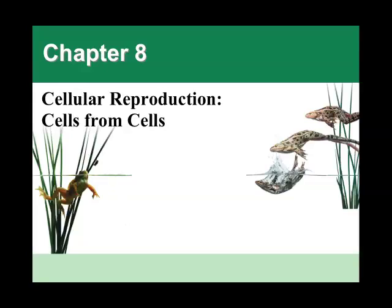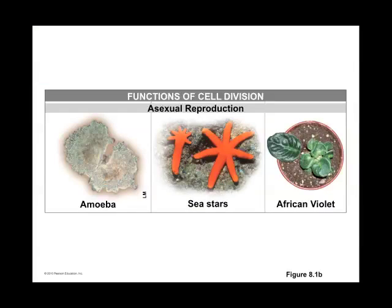We are now at chapter 8, or mitosis. Mitosis is cell division — basically looking at how a cell will copy itself and divide. There are many different ways it can happen depending on the species. The first one we're looking at is called asexual reproduction.